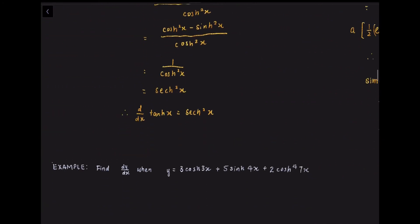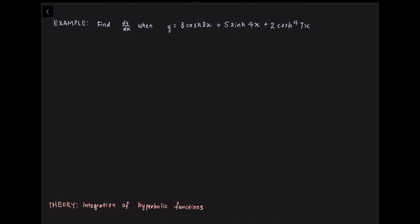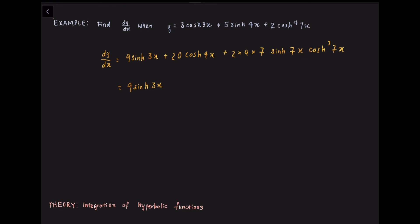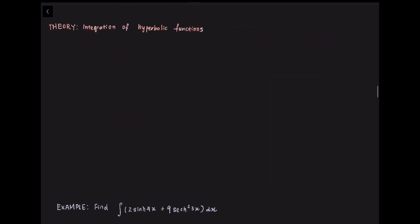Let us now look at this example. We want to find dy/dx when y equals 3·cosh(3x) + 5·sinh(4x) + 2·cosh⁴(7x). To differentiate cosh⁴(7x), we express it as (cosh(7x))⁴ and apply the chain rule. Hence, dy/dx equals 9·sinh(3x) + 20·cosh(4x) + 56·sinh(7x)·cosh³(7x).